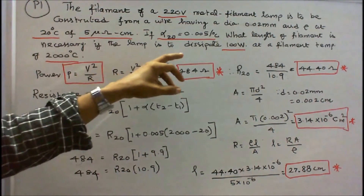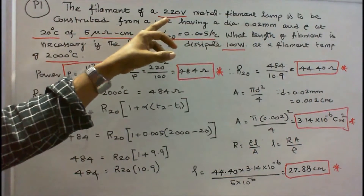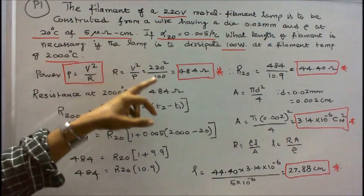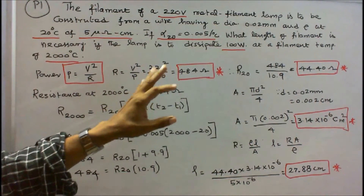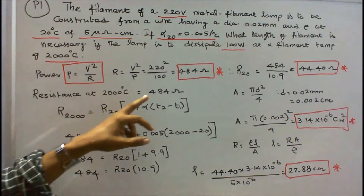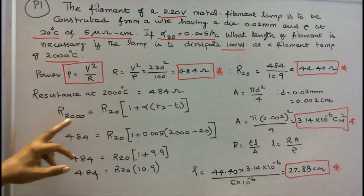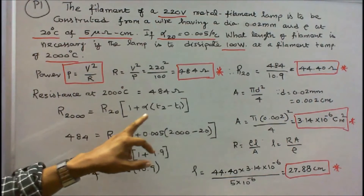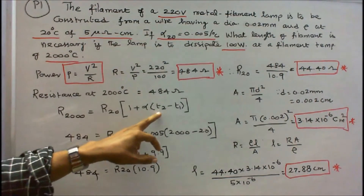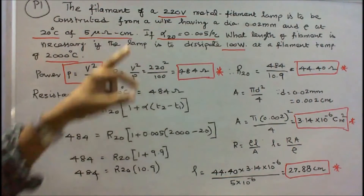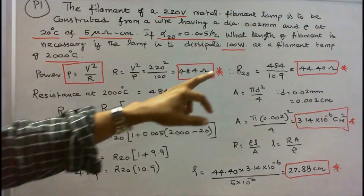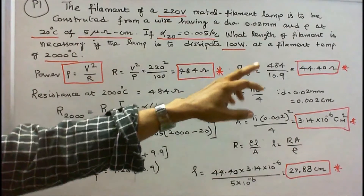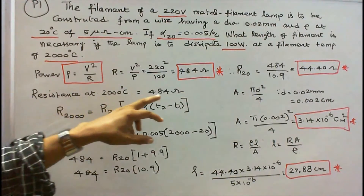In this question, the power dissipation is 100 watts and voltage is 220 volts. We know that power P is equal to V squared by R, so R is equal to V squared by P. 220 squared divided by 100 is equal to 484 ohms. Resistance at 2000 degree centigrade is equal to 484 ohms. Using the formula: resistance at 2000°C equals resistance at 20°C into 1 plus alpha into (T2 minus T1), with alpha equal to 0.005, T2 equal to 2000, and T1 equal to 20. Substituting, resistance at 20 degree centigrade is equal to 484 divided by 10.9, which is equal to 44.40 ohms.